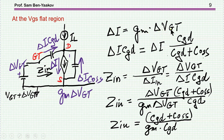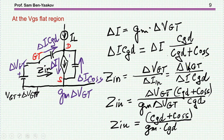Delta I is gm times delta V gate — that is this perturbation at the input. The input impedance is of course voltage divided by current, and the current is the current through the gate-to-drain capacitor. Taking into account the current divider — the fact that this current is being divided between the two capacitors — the input impedance is the voltage divided by the current of this CGD. Plugging in the values, I get that the input impedance is equal to this ratio of capacitances over gm.